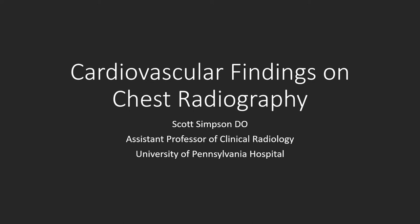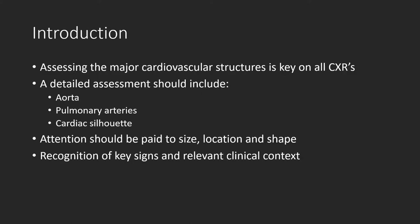Hi, my name is Scott Simpson, and in this lecture we'll be discussing some basic cardiovascular findings on chest x-ray with CT and MRI correlation. Adequate assessment of the major cardiovascular structures is critical for accurate chest x-ray interpretation. They should always include careful scrutiny of the aorta, pulmonary arteries, and cardiac silhouette. Attention should be made to not only size, but also location, overall shape, and density. We will be discussing some key signs that can be used to help identify abnormalities of these cardiovascular structures, as well as some important clinical clues that could help arrive at a more specific diagnosis and guide additional imaging if necessary.